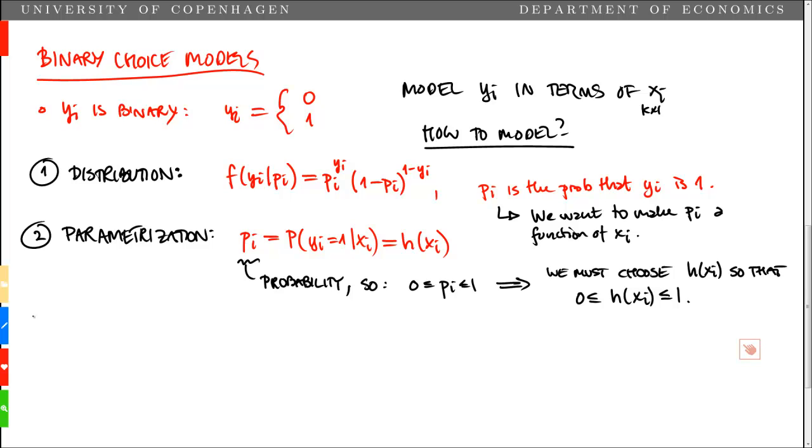Now there are many ways of specifying this function h of xi, but the typical way of doing it is to use what we call a link function, which serves the purpose of a mapping from xi onto the interval 0 to 1. Note that this is a mapping from k-dimensions xi onto a single interval from 0 to 1.